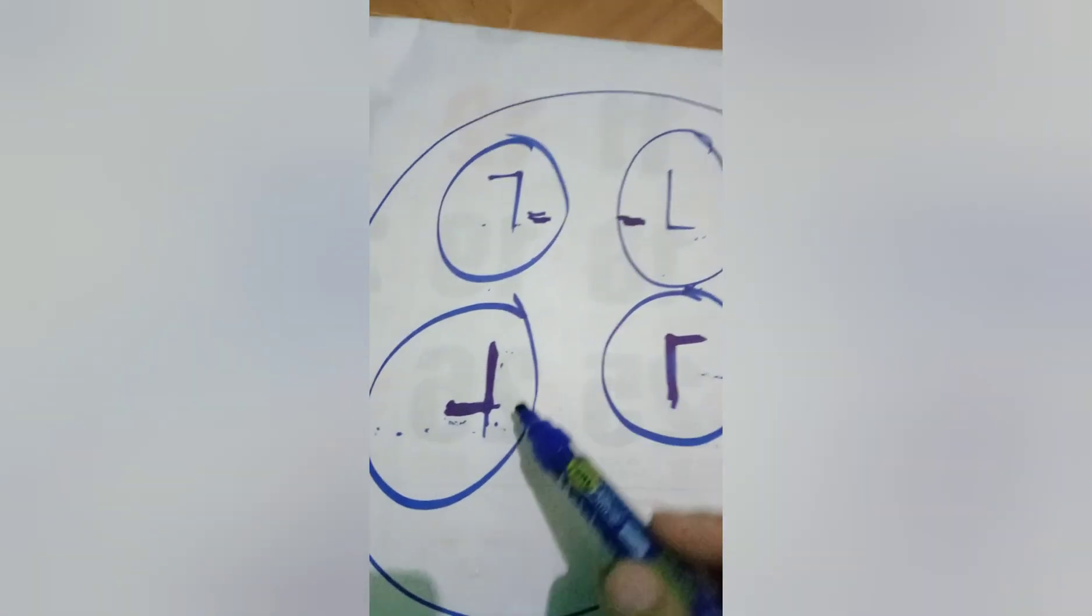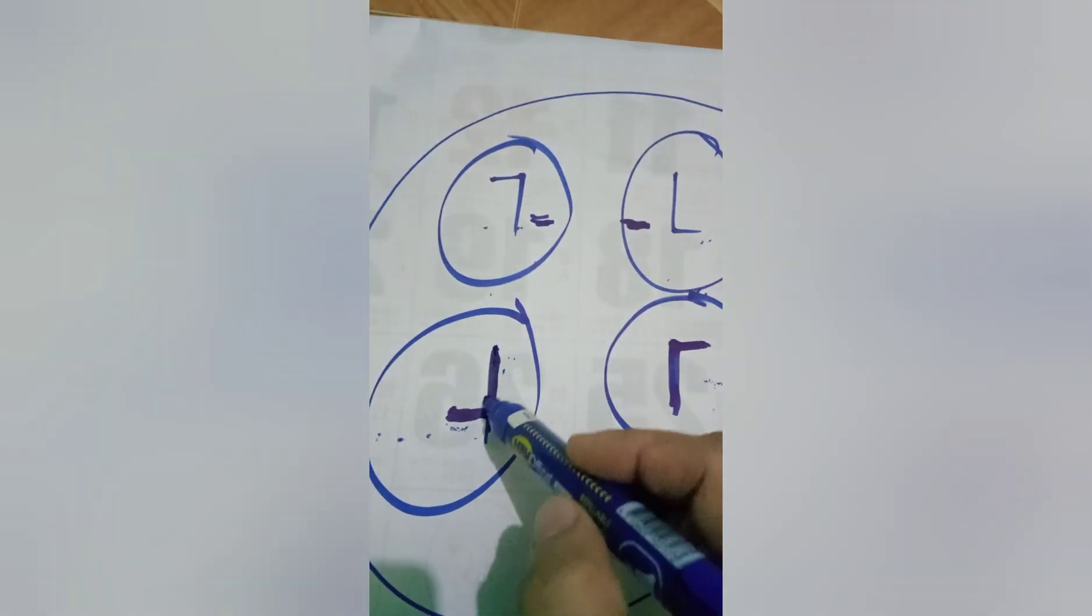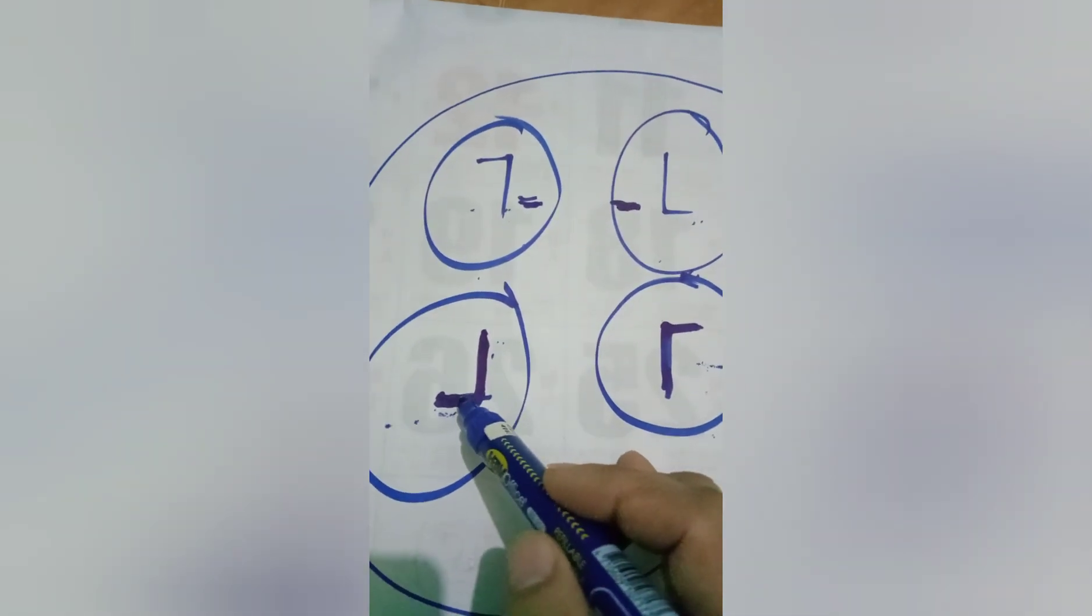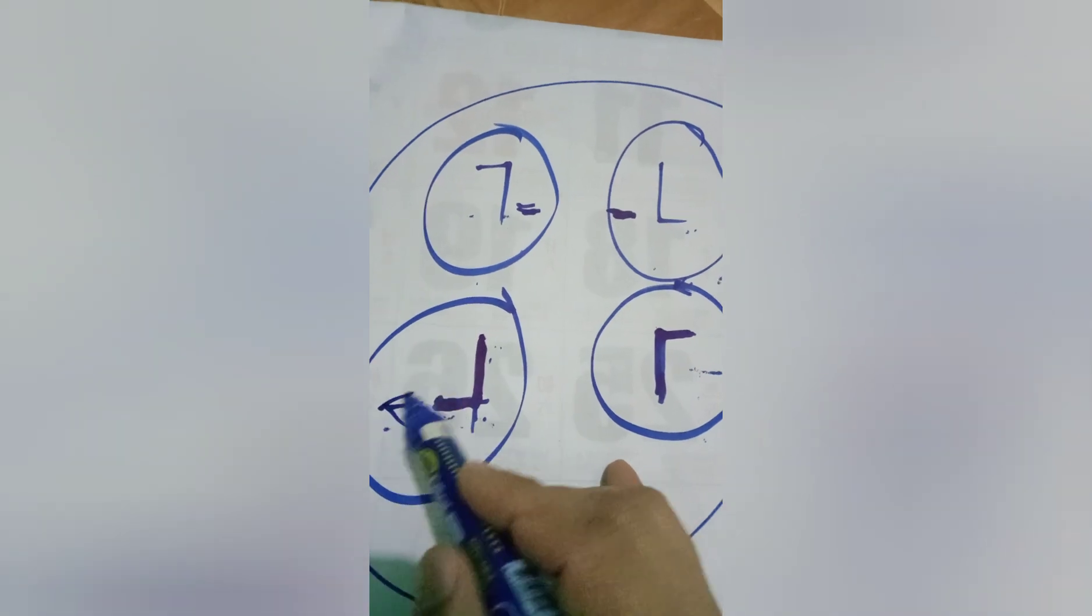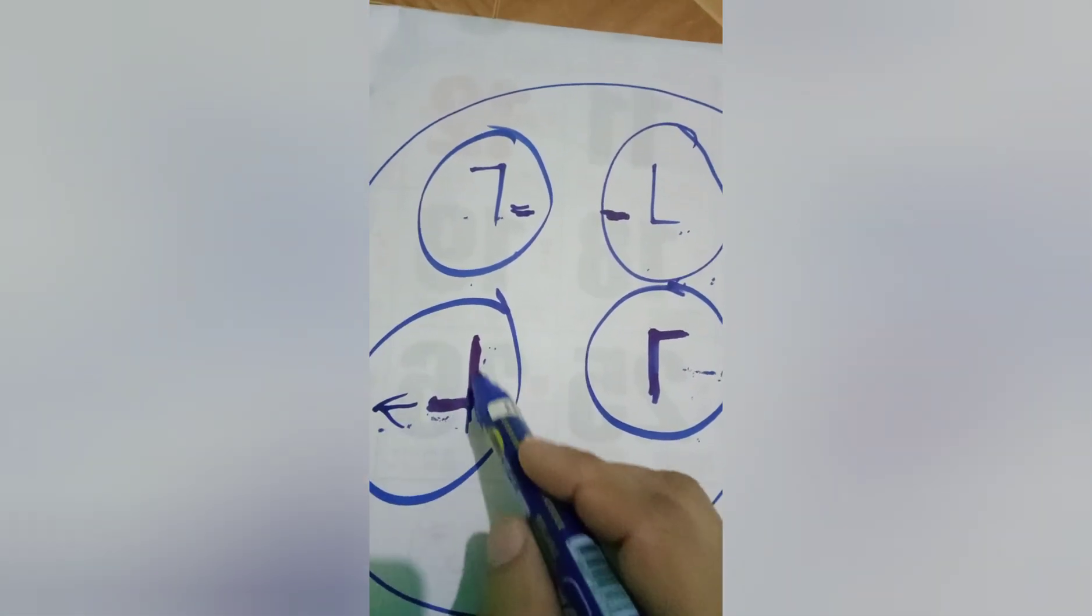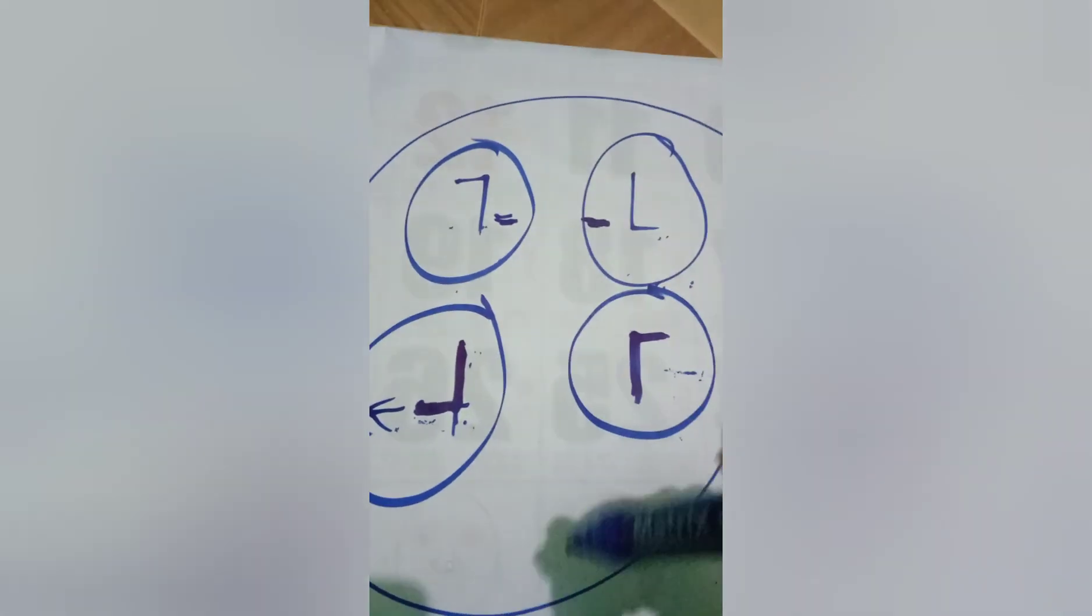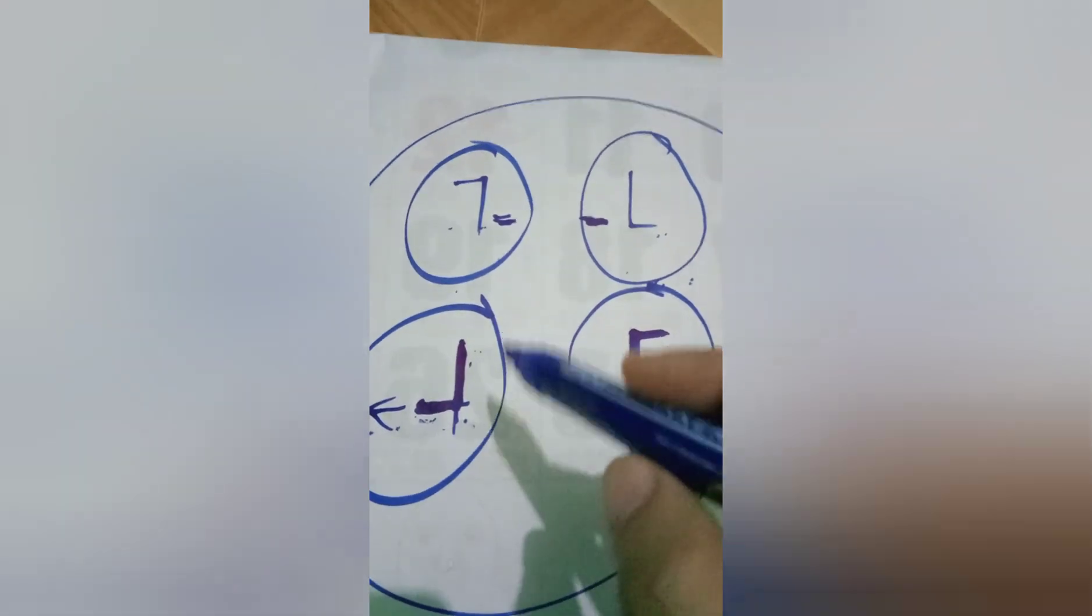Paano po ito ma-determine? Kapag ganito, yung pagka-ukit, ang titingnan mo lang ay yung short arm nya. Kapag papunta yung short arm sa kaliwa na direksyon, ito po ay 7. Tandaan mo. At saka yung pinaka-importante dito, katika ito yung position mo.